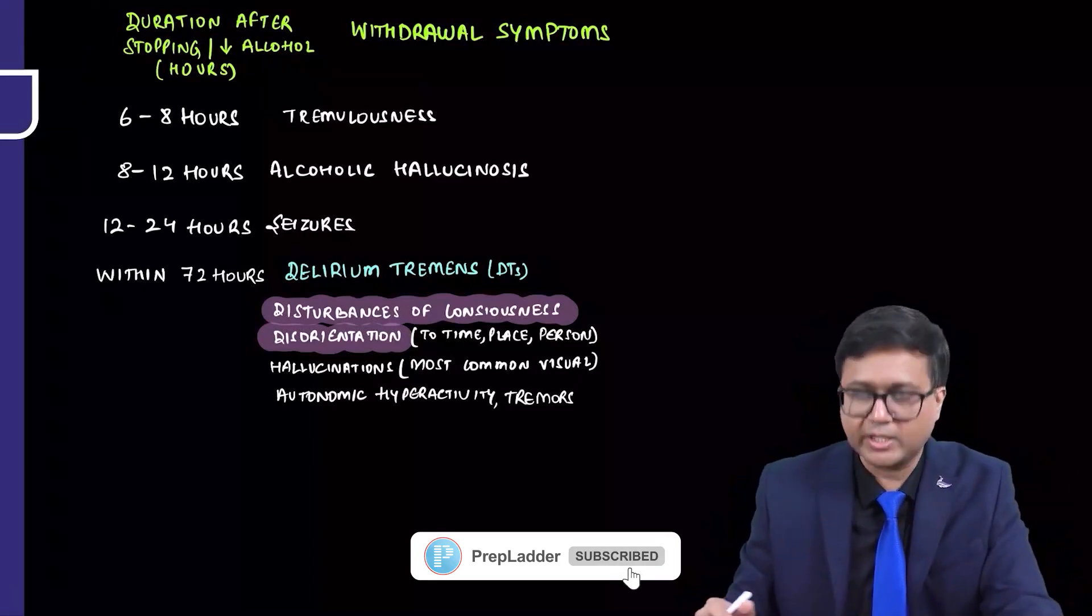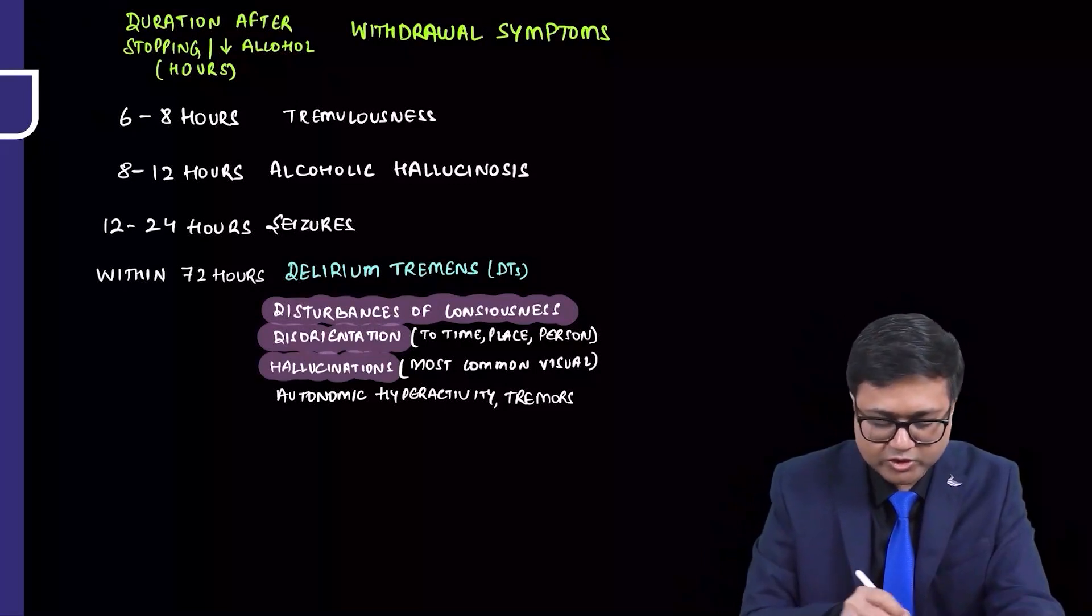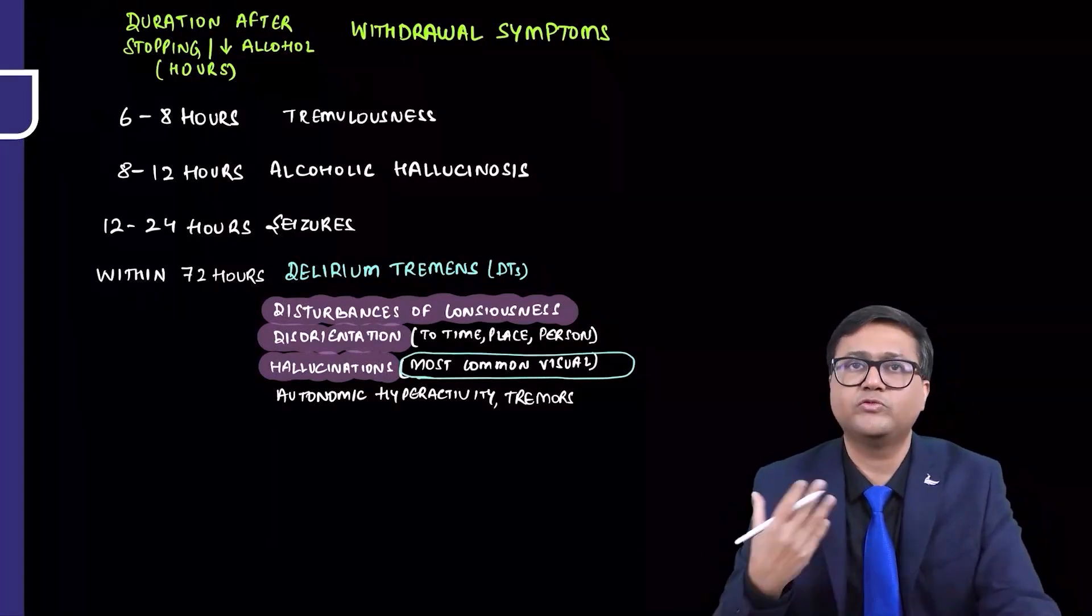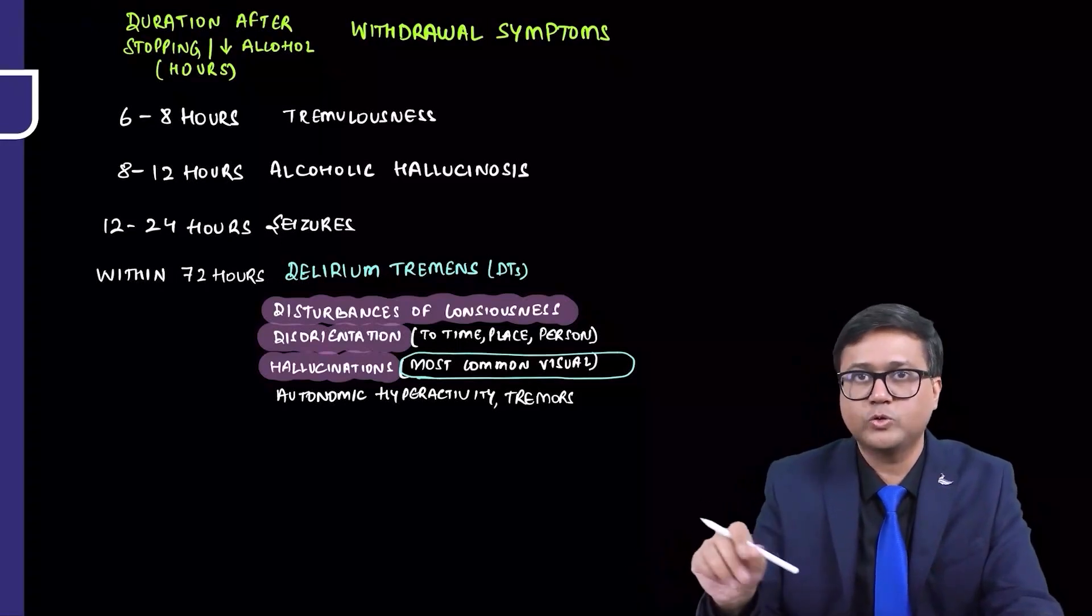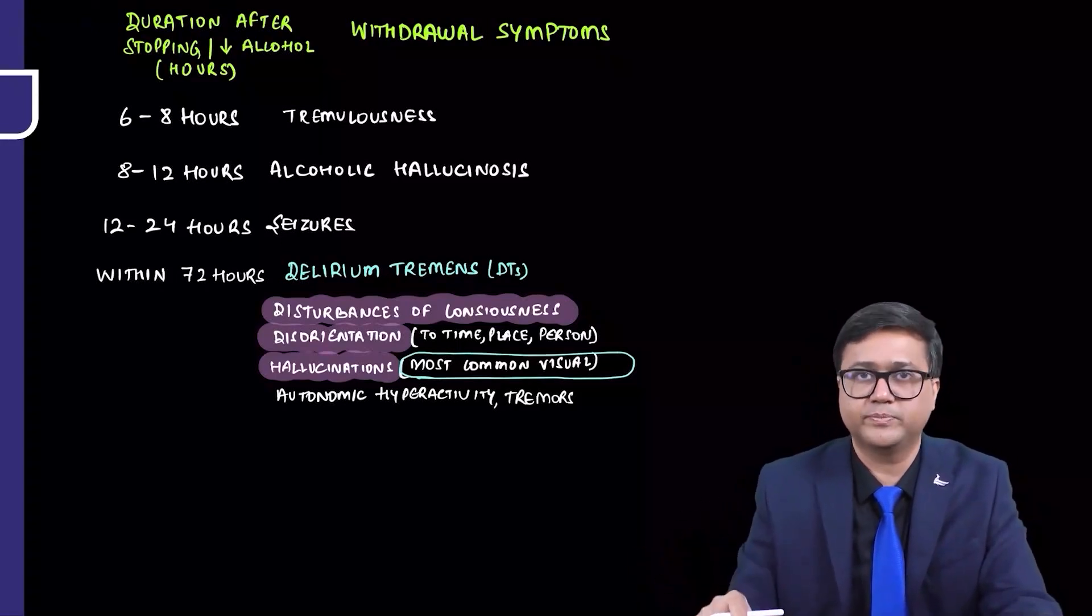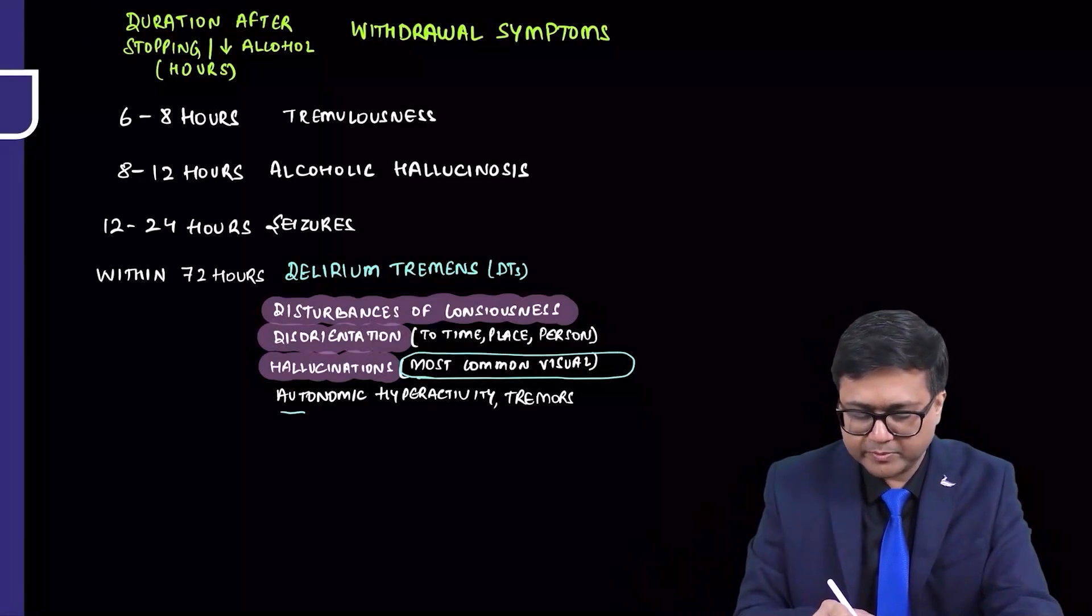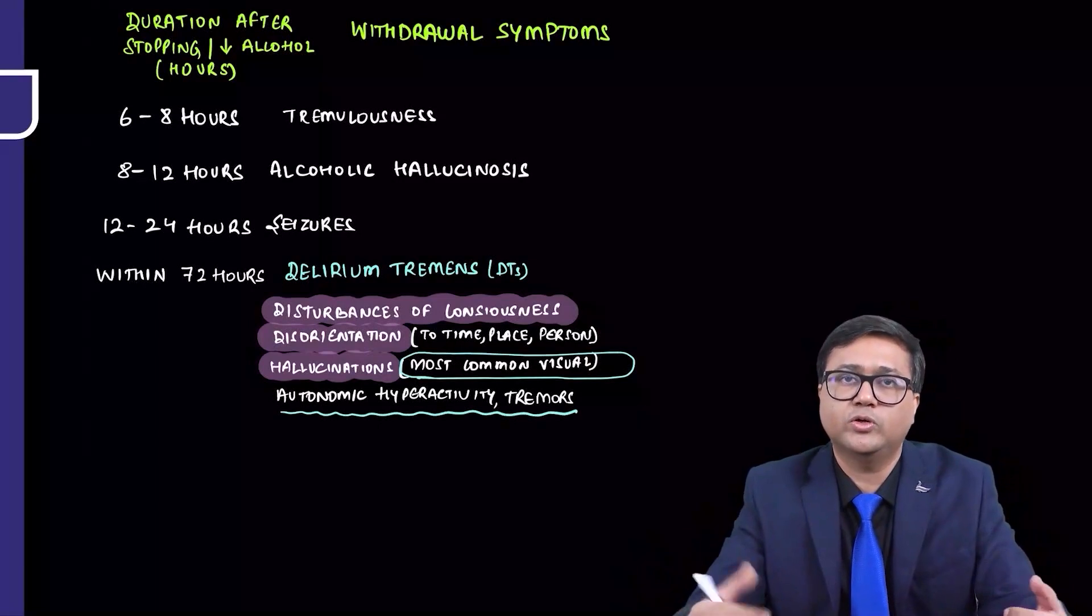Even in delirium tremens, there may be hallucinations. But very important to remember here, most common hallucination in delirium tremens is visual hallucinations. He is reporting maybe that there are small snakes he can see which are crawling. Visual hallucinations are more common. Of course, auditory hallucinations can also occur. And of course, other symptoms like autonomic hyperactivity, tremors may also be seen. Now he has landed into delirium tremens.